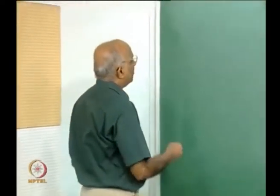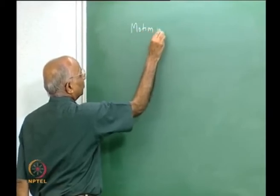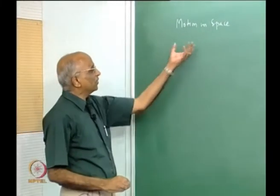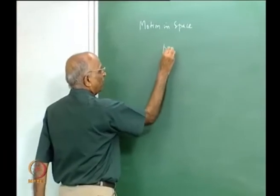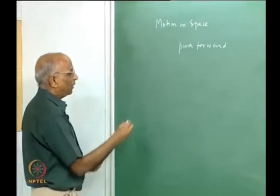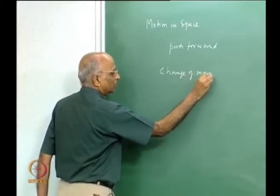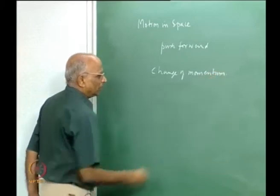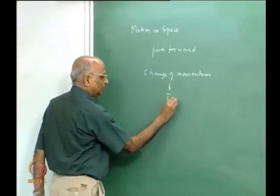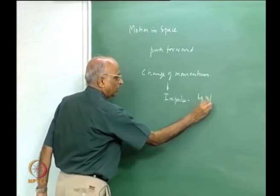In the last class we considered motion in space. We told ourselves we are pushing ourselves in space, and therefore we are trying to push forward, for which we have to provide a change of momentum. When we say change of momentum, that is what we call impulse, and it has units the same as momentum, namely kilogram meter per second.